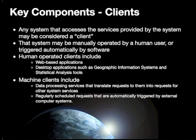In the client tier, any system that accesses services provided by either the processing or data tiers can be considered a client. Clients may be manually operated by a human or automatically executed by software systems. Human-operated clients include web-based or desktop applications such as GIS or statistical tools. Machine clients are systems operating somewhat autonomously, with regularly scheduled processes that retrieve data and access data processing services to perform particular functions.